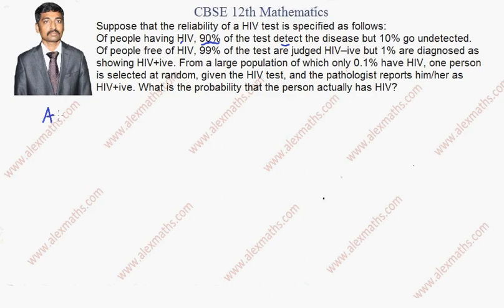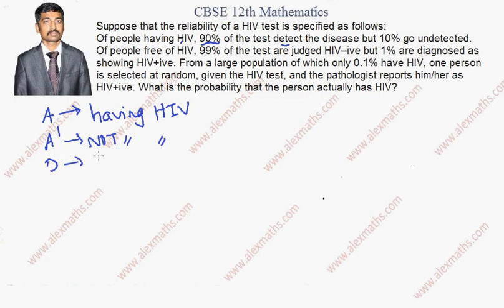First, let us name A as having HIV, A dash as not having HIV, D as detect — meaning it detects the disease — and D dash as not detected.